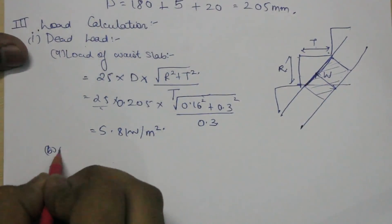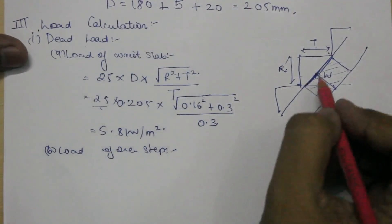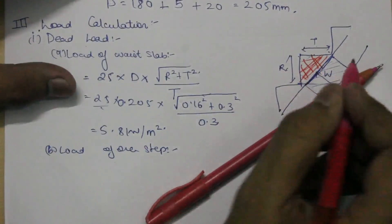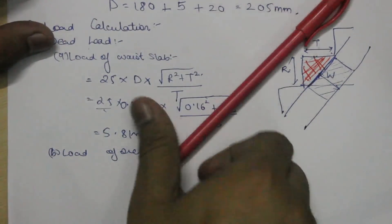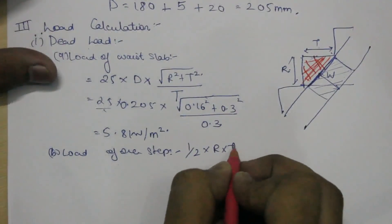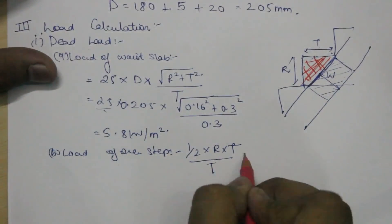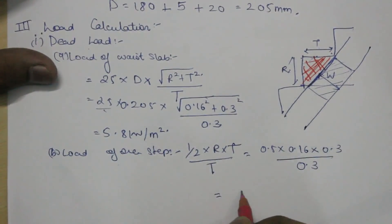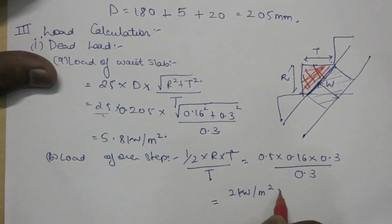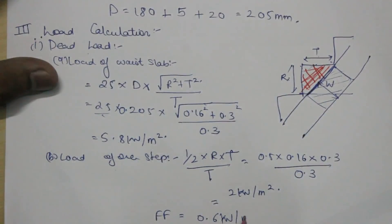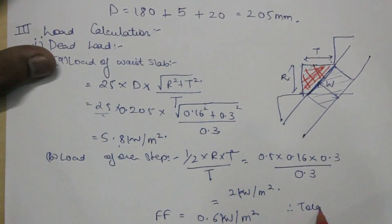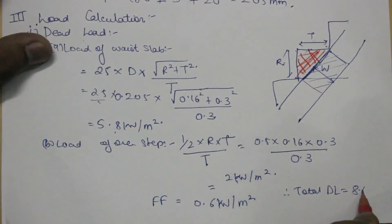The second thing would be to calculate the load of one step, so the load of one step would be this area which will be the area of triangle which is given as half into r into t, and we want it to be acting horizontally so we will divide it by t. So 0.5 multiplied by 0.16 multiplied by 0.3 upon 0.3 which is equal to 2 kilonewton per meter square. Let's assume a floor finish load as 0.6 kilonewton per meter square. If we add all these up, that is 5.8, 2, and 0.6, so therefore total dead load will be 8.4 kilonewton per meter square.